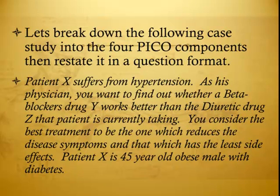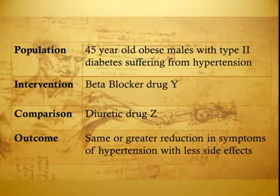Let's break the following case study into the four PICO components, then restate it in a question format. Patient X suffers from hypertension. As his physician, you want to find out whether beta blocker drug Y works better than diuretic drug ZAD that the patient is currently taking. You consider the best treatment to be the one which reduces the disease symptoms and has the least side effects. Patient X is a 45-year-old obese male with type 2 diabetes. Population: 45-year-old obese males with type 2 diabetes suffering from hypertension. Intervention: Beta blocker drug Y. Comparison: Diuretic drug ZAD. Outcome: Same or greater reduction in symptoms of hypertension with less side effects.